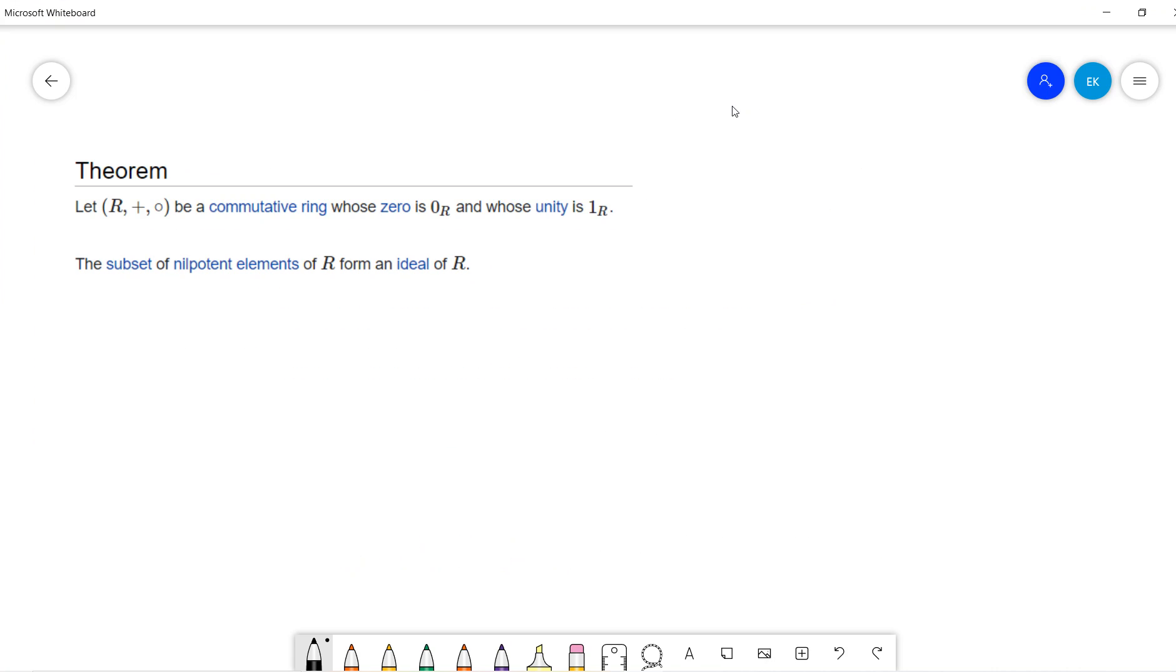Welcome guys. Today we're going to prove this theorem. Let R be a commutative ring with zero_R and one_R, where one is the unit.